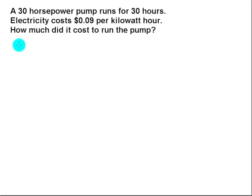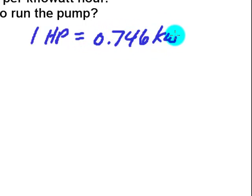So what we're trying to do is we're trying to take 30 horsepower and somehow magically turn that into dollars. And it's actually not too difficult if you know the secret. And the secret is that one horsepower is equivalent to .746 kilowatts.